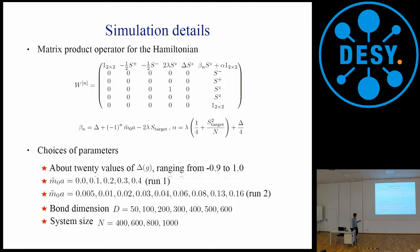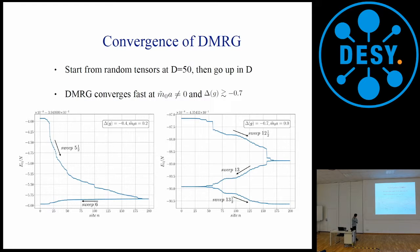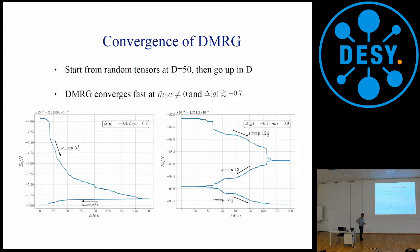In the results I'm presenting, we first do the bond dimension to infinity extrapolation and then extrapolate to system size equals infinity. Before showing results for the phase structure, let me show you the convergence of our DMRG search for the ground state. This is the energy per site for a particular choice of couplings G and mass M. You can see that in some cases you have to go through more sweeps for the energy to converge — this actually indicates that there may be two distinct phases in the theory, just from this algorithmic performance.